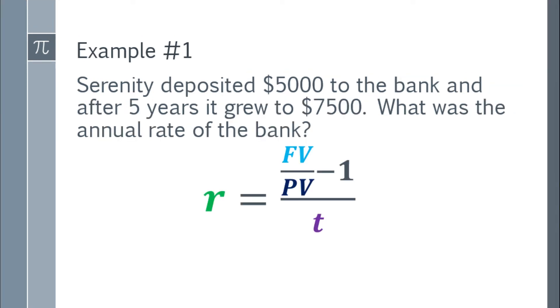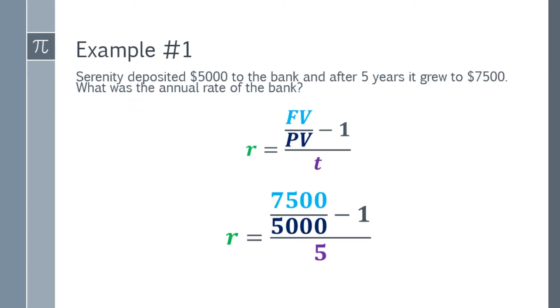Let's start by placing the formula. After we place the formula, we substitute the given. We have for FV over PV, that's $7,500 over $5,000. That answer, we minus by 1, that's for the numerator. For the denominator, since we have 5 years, the denominator will be 5.